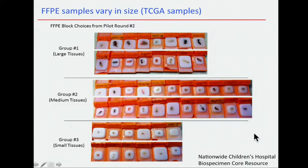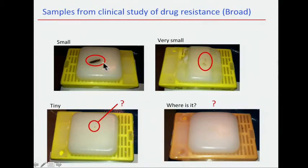So here is the size problem. In TCGA, a nationwide children's hospital separated the sample sizes into three categories: large tissues, medium, and small tissues. And if you go to clinical samples, you could see small tissues, very small tissues, tiny tissues, and cases where we don't know where the tissue is. So this is kind of what you could get from clinical samples.